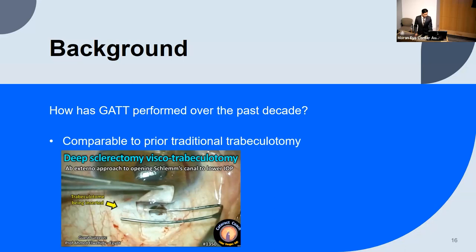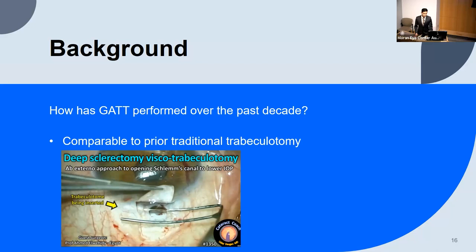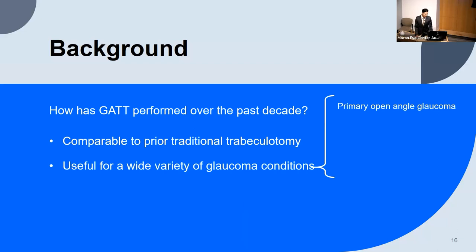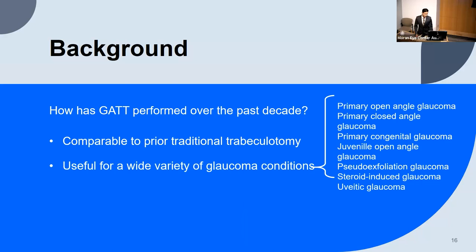The traditional trabeculotomy is an ab externo approach — you go under conjunctiva and sclera. There have been many ways described, including use of a metal trabeculotome, working in Schlemm's canal from an external access point. Our approach now goes through the cornea without disturbing the conjunctiva or sclera. The GAT since its inception in 2014 has been shown useful for a wide variety of conditions: POAG, primary closed-angle glaucoma, congenital glaucoma, juvenile open-angle, pseudoexfoliative, steroid-induced, and even uveitic glaucoma.